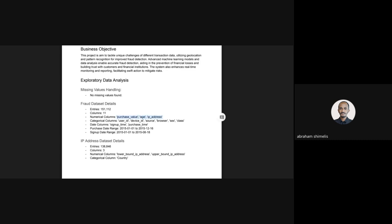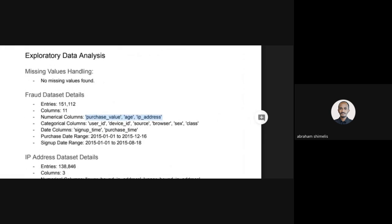The fraud dataset contains about 150,000 to 250,000 rows with 11 columns. Here are the columns which are numerical, here are the columns which are categorical, and there are also date columns which are sign-up time and purchase time.